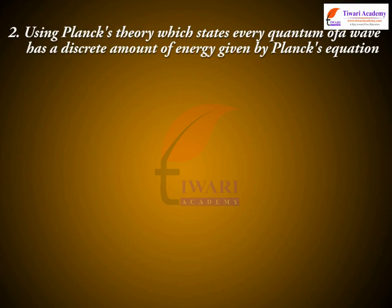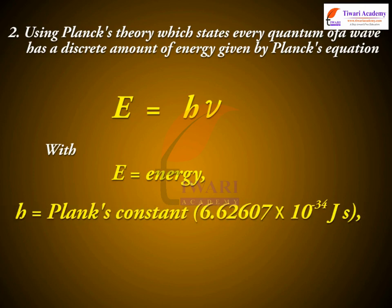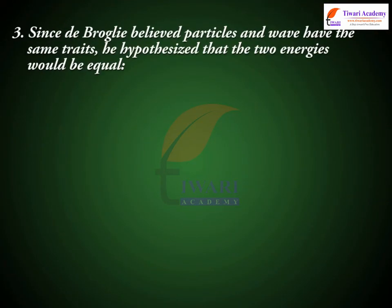Step 2: Using Planck's theory, which states every quantum of a wave has a discrete amount of energy given by Planck's equation, E = hν, where E equals energy, h equals Planck's constant (6.626 × 10⁻³⁴ J·s), and ν equals frequency.